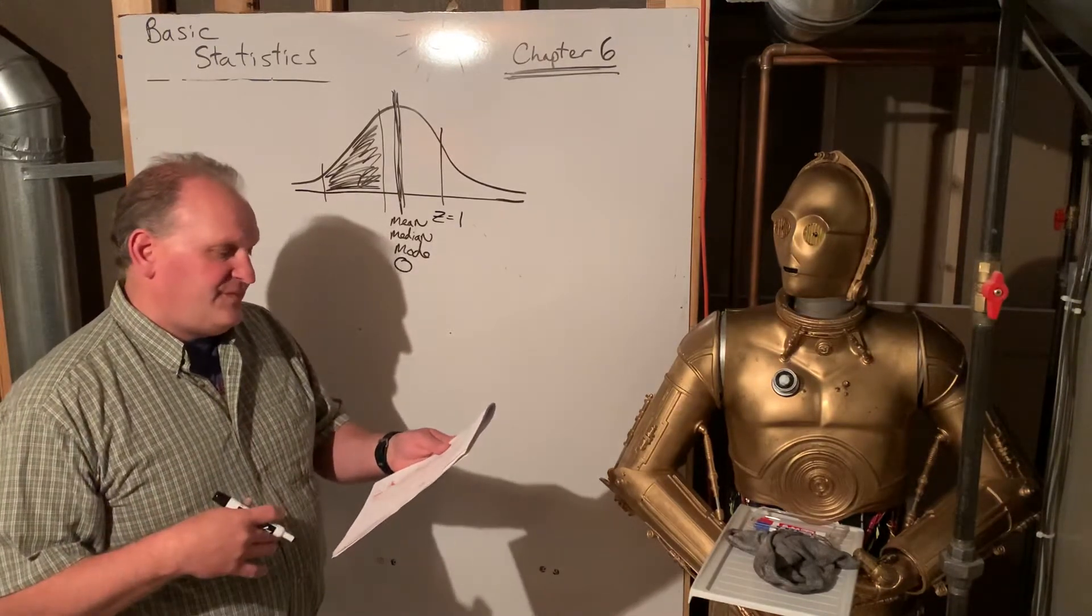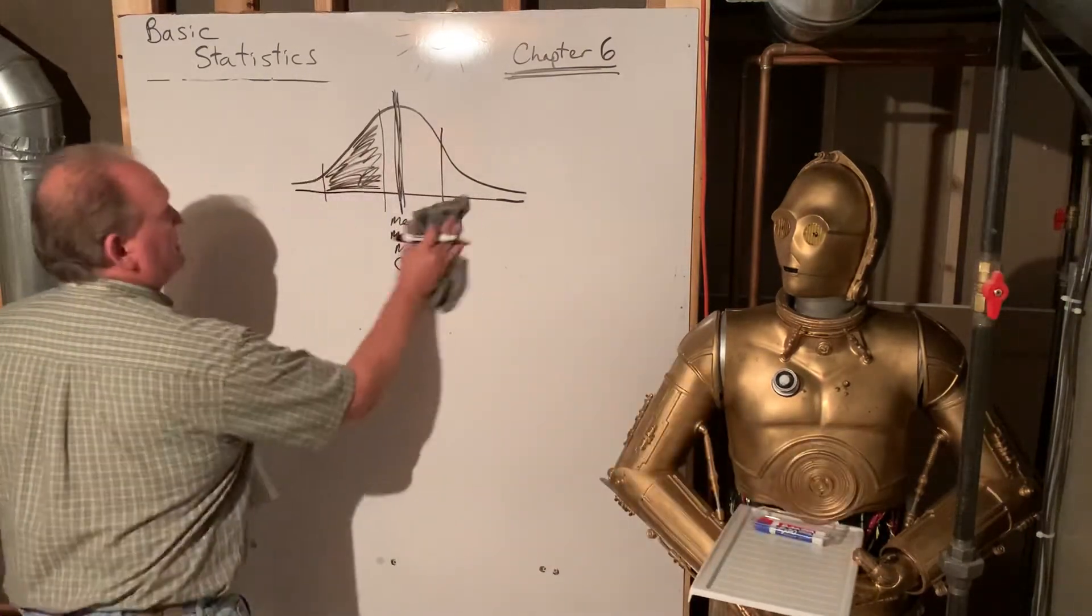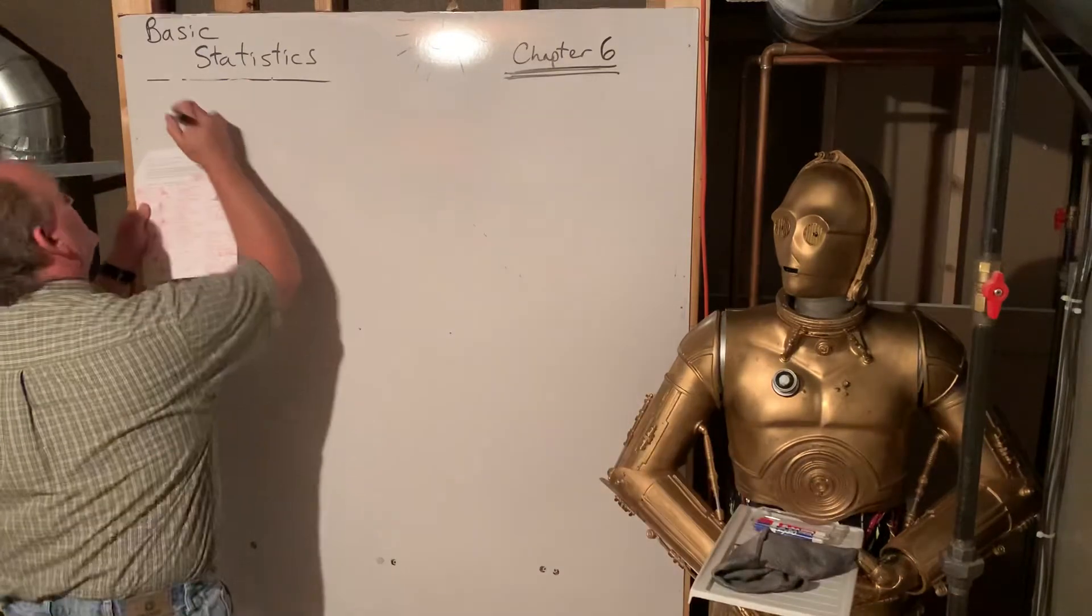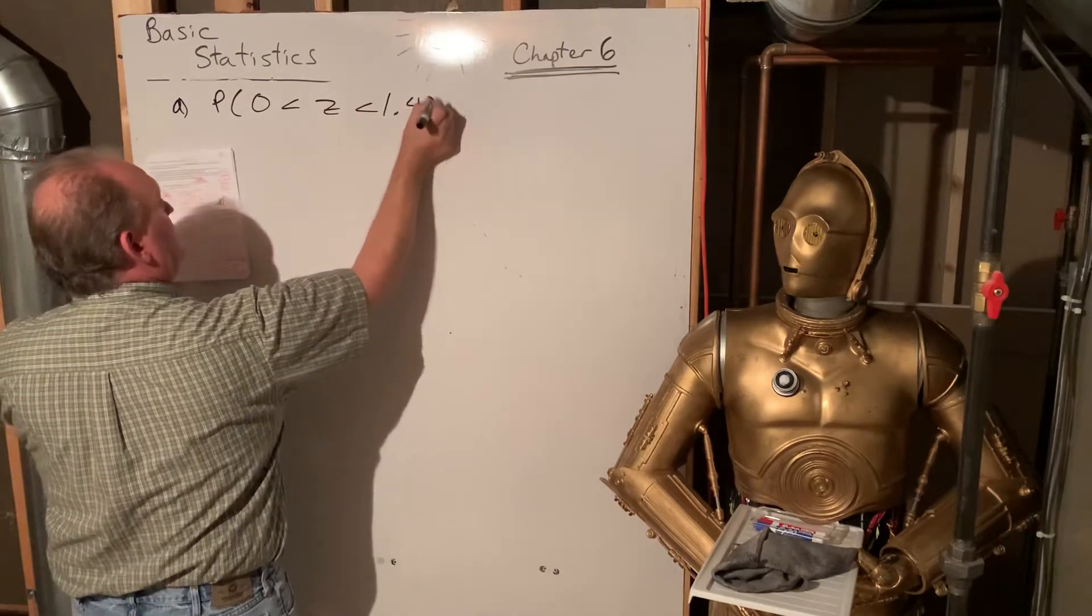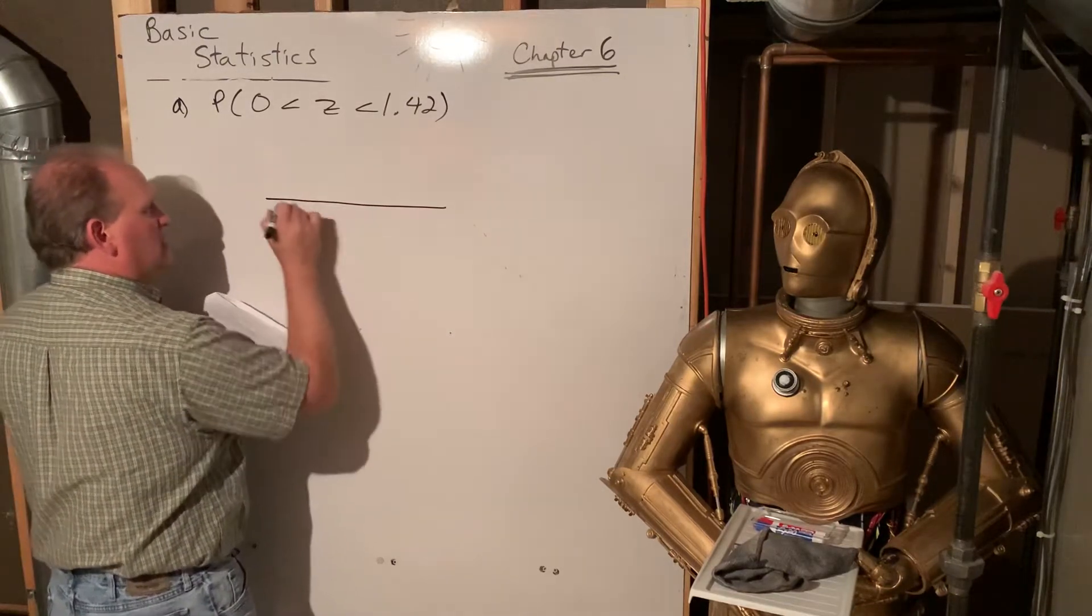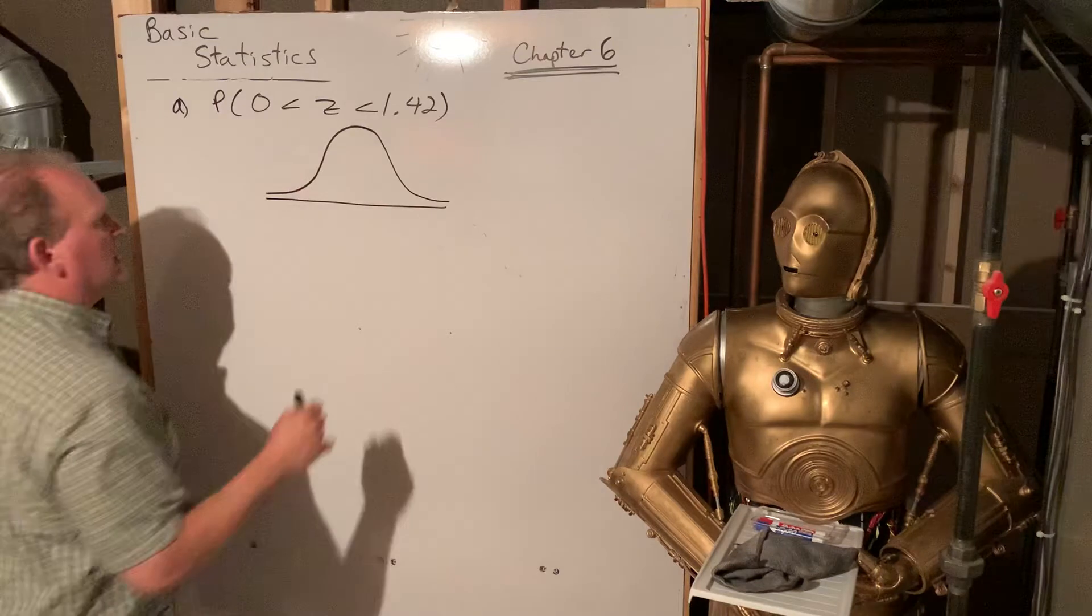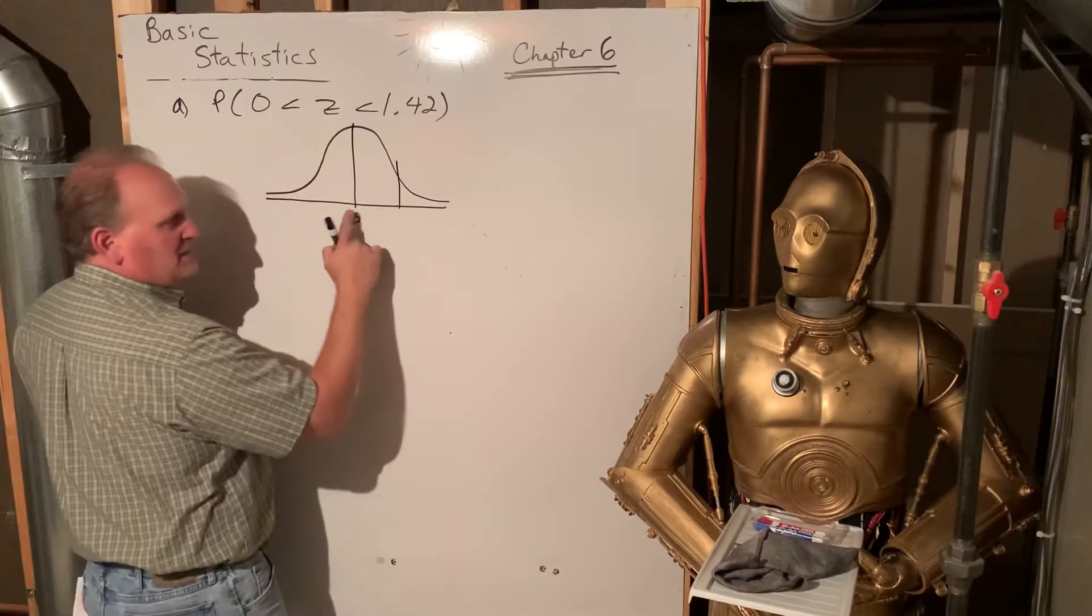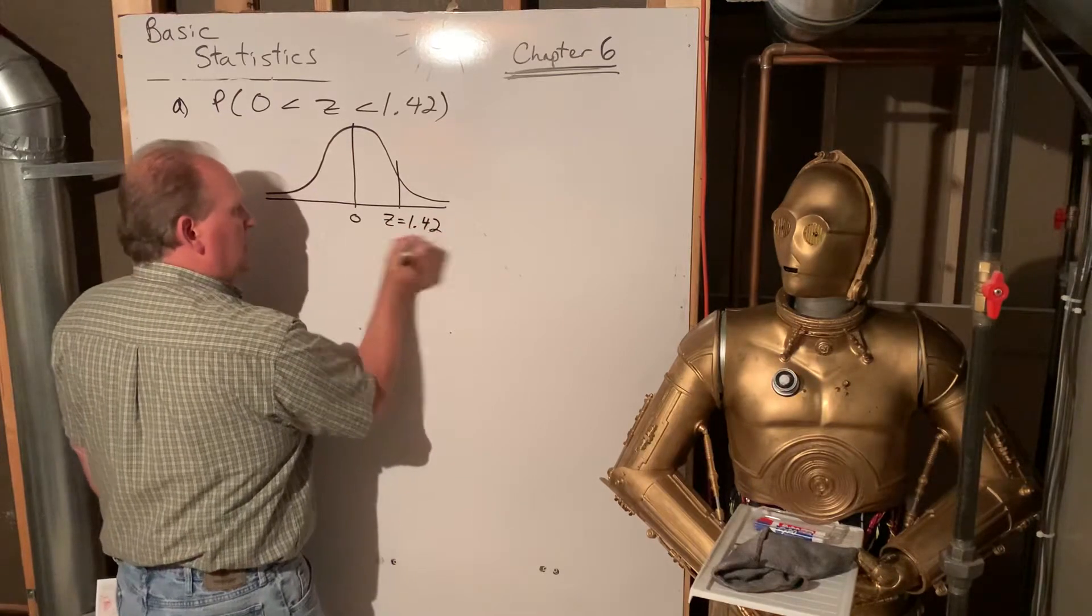So let's find areas under the curve. That's what page two is all about. The probability we're between zero and 1.42 for z-scores. I always want you to draw a picture. Get used to that. Drawing a standard normal curve. It doesn't have to be super pretty. And then mark down what they want. So they want zero and they want 1.42. If it's positive, it's this way. If it's negative, it's this way. So z equals 1.42 and z equals zero.